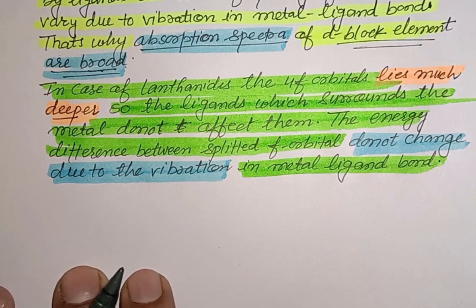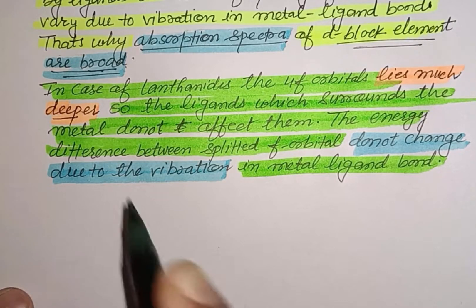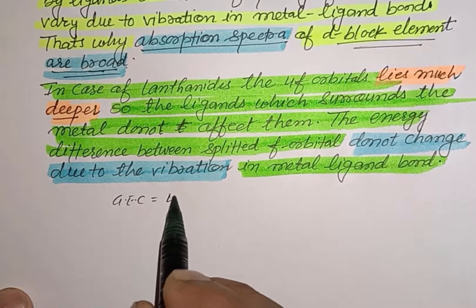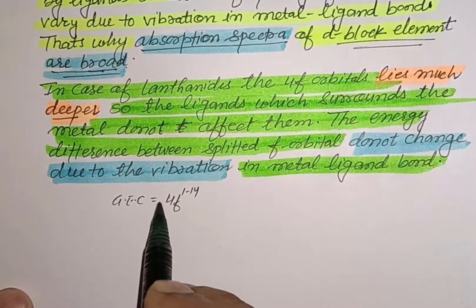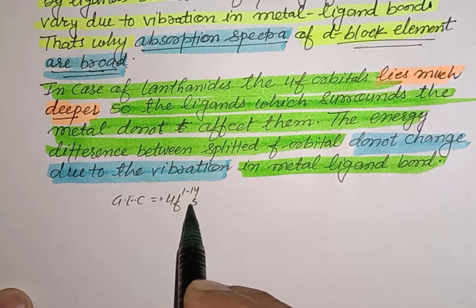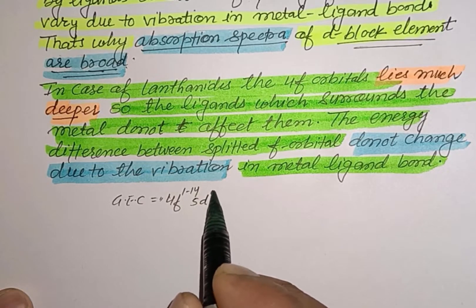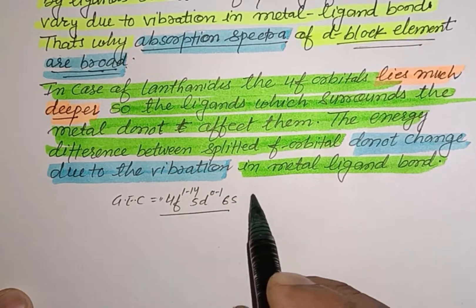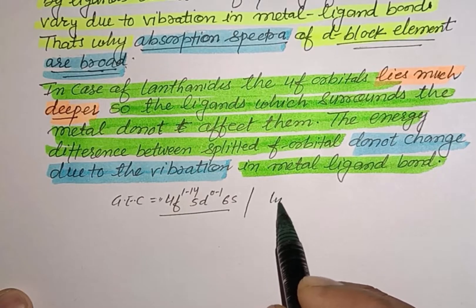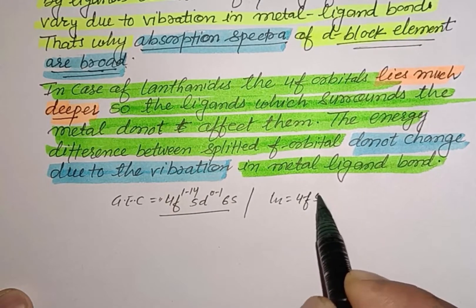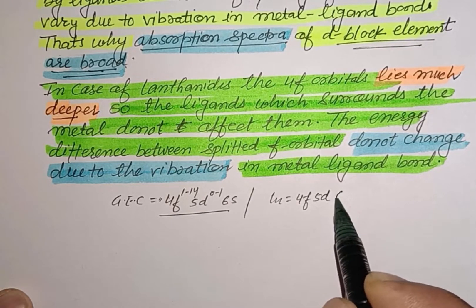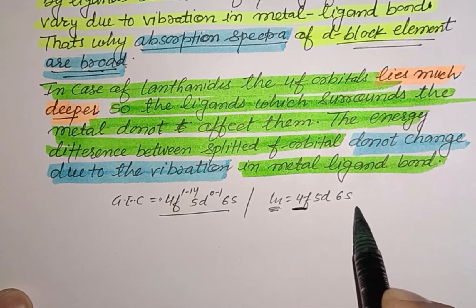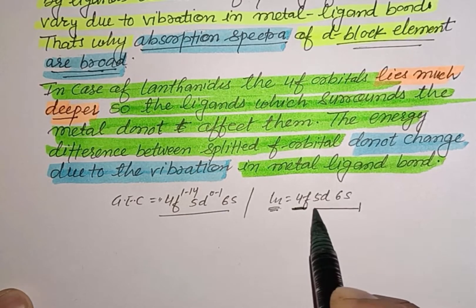Comparing this with the electronic configuration of f-block elements: the general configuration is [noble gas] 4f¹⁻¹⁴ 5d⁰⁻¹ 6s². So for a lanthanoid metal, the order is: lanthanoid metal, then 4f, then 5d, then 6s. As compared to transition elements, the 4f orbitals are much deeper and more inner.